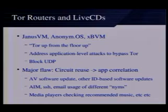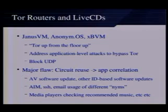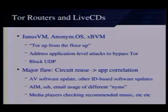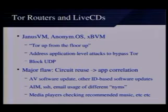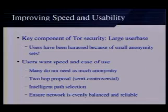Tor routers and live CDs — there are a few of these, one being presented immediately following this talk. JanusVM and the Zero Bank virtual machine are the major examples. These basically drop everything that doesn't go through Tor. The major issue is that circuit reuse can be problematic. If you use antivirus software that updates with a unique identifier, ID-based software updates, AIM, SSH into a shell with your name in the domain, or connect to an email account you don't want linked to your anonymous traffic, an exit node can figure this out and begin to associate them.